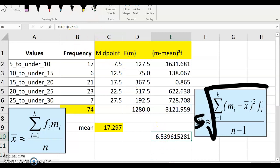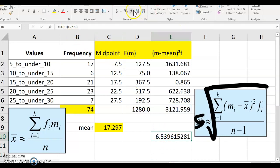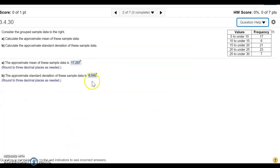So now we have the square root, which is going to be the standard deviation. And we're going to round to three decimal places, which is 6.540.